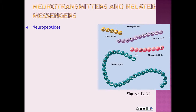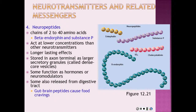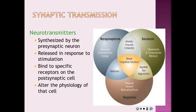The fourth group is neuropeptides. They are chains of two to four amino acids and typically act in lower concentrations, have longer-lasting effects than other neurotransmitters, and are stored in larger secretory granules. They also function as hormones or as neuromodulators. Some are produced not only by neurons but also by the digestive tract.